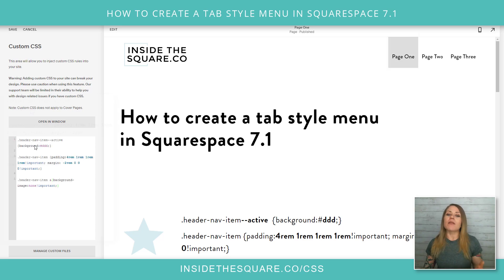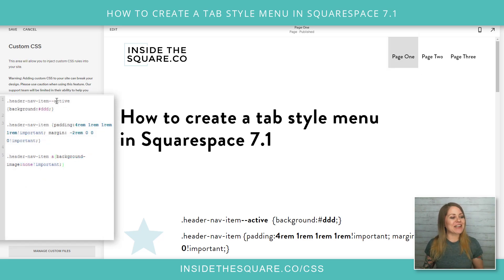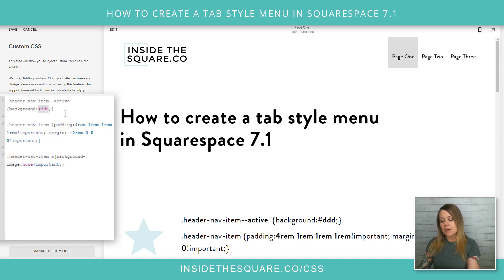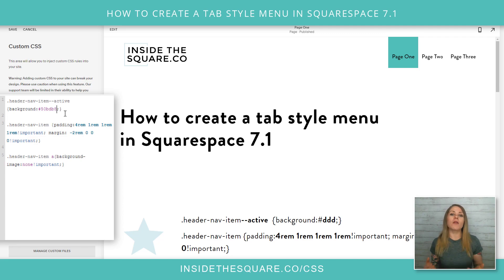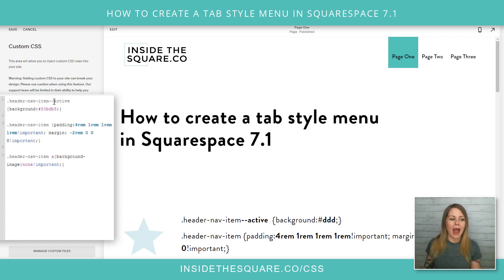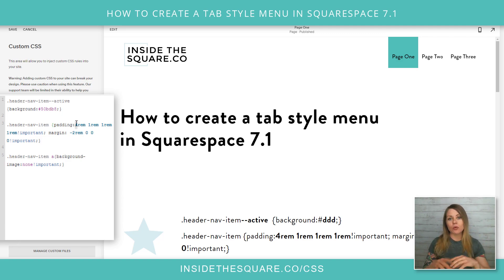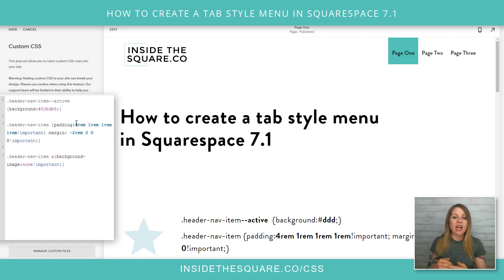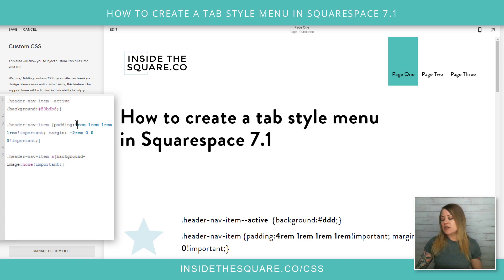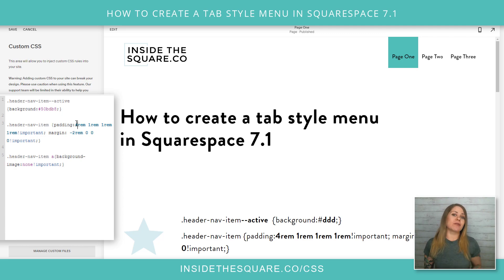This is where I'm going to paste the code. The first part of this code — you'll see, there we go, it's already changed. This first part changes that background color. I have it set to a soft gray here in my demo, but you could change it to the word 'orange' for example, or you could type in a hex color code for the color that you want it to be. That's the part of the code you change to change the color of the tab that you're currently on — your active tab. This next line here has padding and margin, which is going to change the size of that actual tab on your menu. I can change this to two REM if I want it to be smaller, or nine if I want it to be a bigger tab.